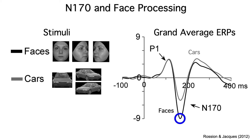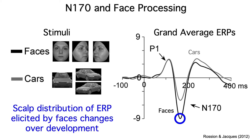Previous studies of the development of face processing had just looked at the ERPs elicited by faces. These studies found that the scalp distribution of the N170 changed markedly over the course of development, and they concluded that children and adults use different brain systems for face processing. But the change in scalp distribution might have been the result of changes in other components that are also present during the time period of the N170 component, with no change in the actual face processing.